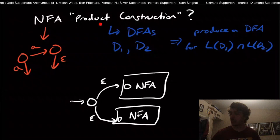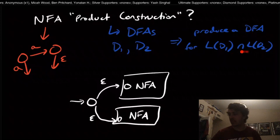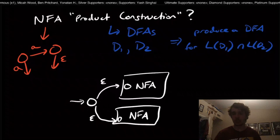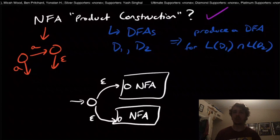So the question we're going to answer is: is there a product type construction for NFAs? Do DFAs exclusively get the intersection property to work, or can NFAs inherit that property also? And the answer we're going to prove here is that yes, there is a product type construction for NFAs.